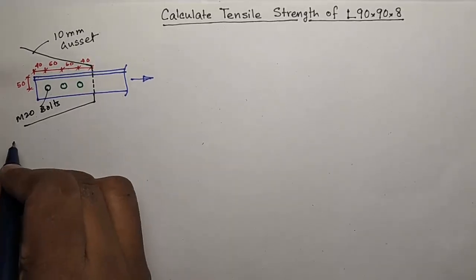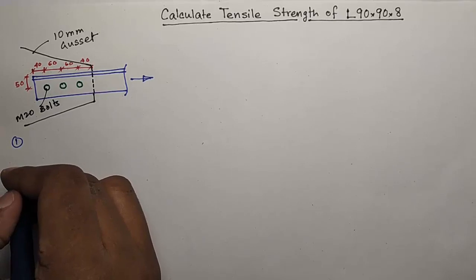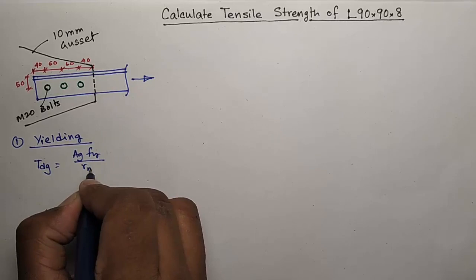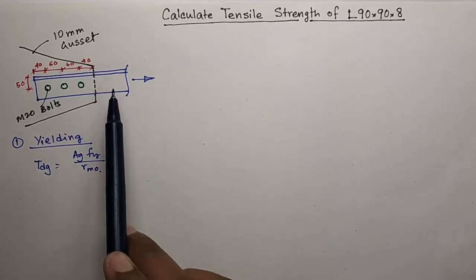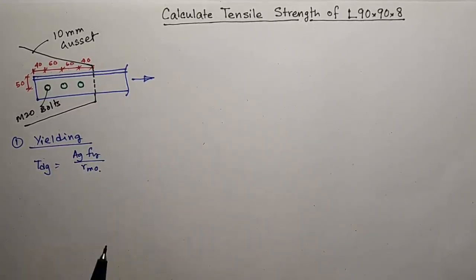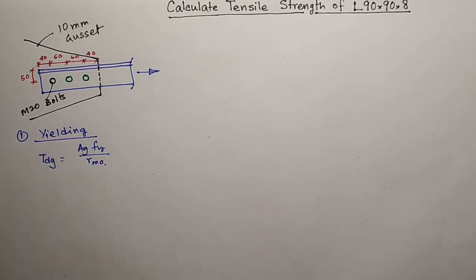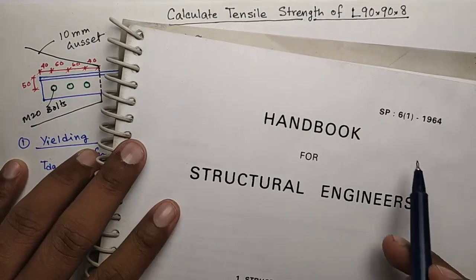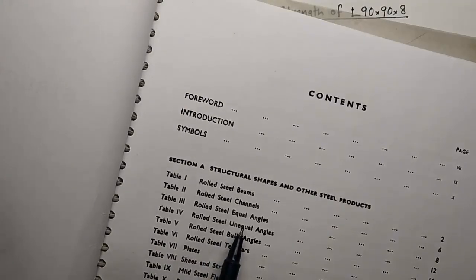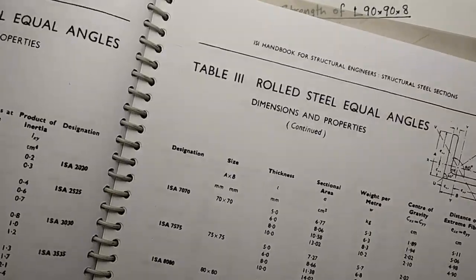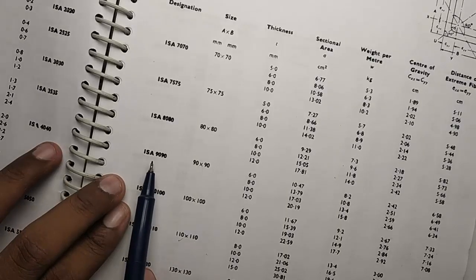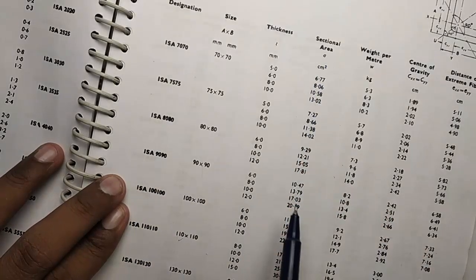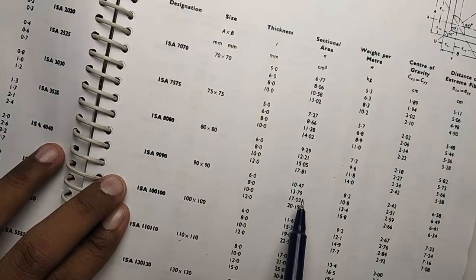The first check is the design strength due to yielding of gross section. The formula is TDG equals AG times FY by gamma M0. AG is the cross-section area of this angle L90x90x8. To find AG, go to SP6-1964, rolled steel equal angles. In page 10, ISA L90x90x8 has thickness 8 and sectional area 13.79 cm square.